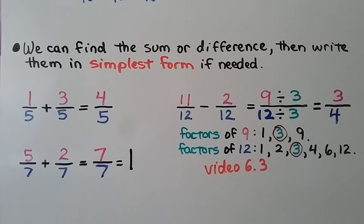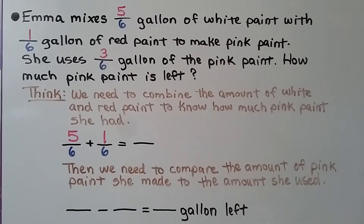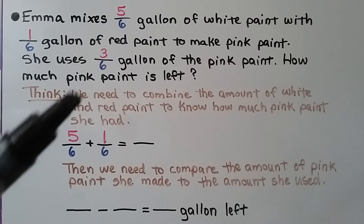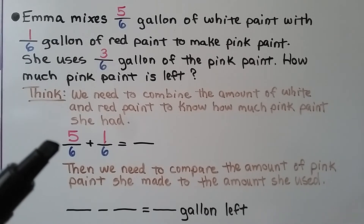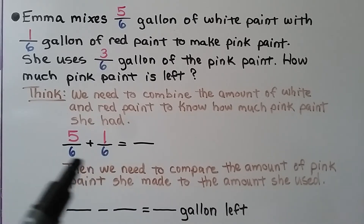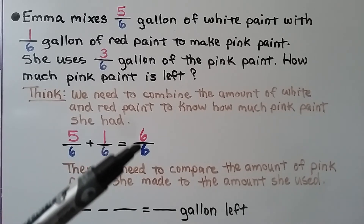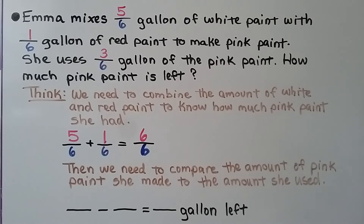If that was confusing, check the description and watch video 6.3 about writing fractions in their simplest form. Emma mixes five-sixths of a gallon of white paint with one-sixth of a gallon of red paint to make pink paint. She uses three-sixths of a gallon of the pink paint — how much pink paint is left? We combine the white and red: five-sixths plus one-sixth. Same denominator, so we slide the six over and add the numerators: five plus one equals six, giving us six-sixths — which equals one whole gallon.